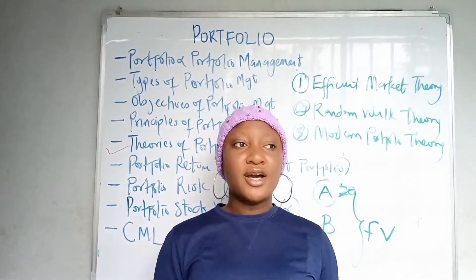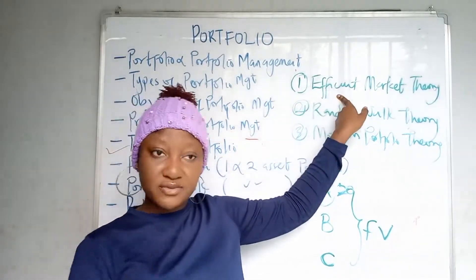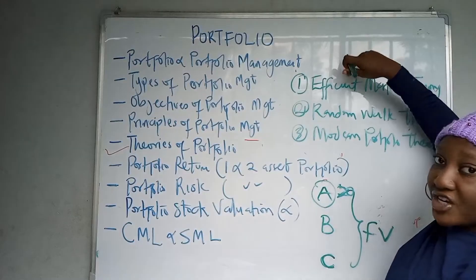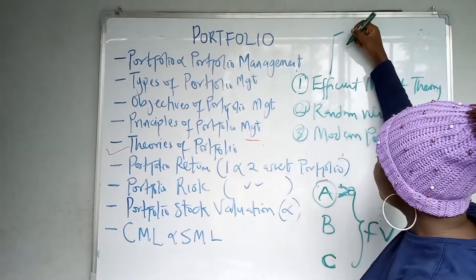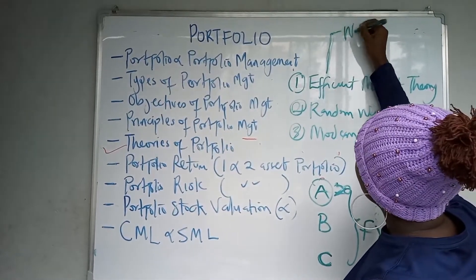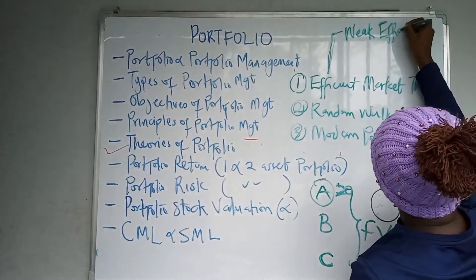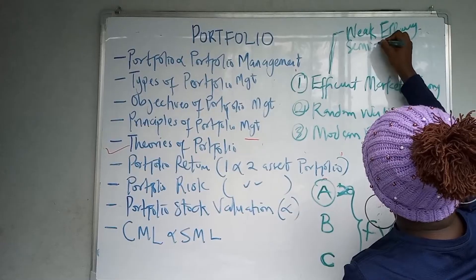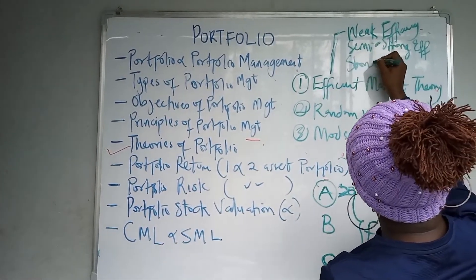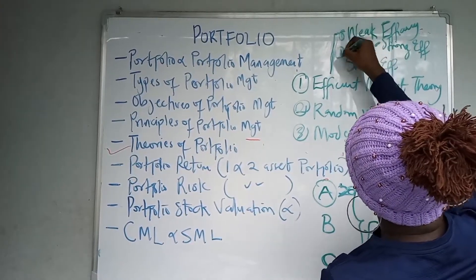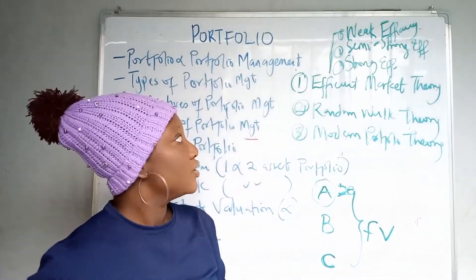The efficient market theory comes in different levels with respect to information. There can be weak efficiency, semi-strong efficiency, and strong efficiency. This distinction was part of the November 2014 examination question.